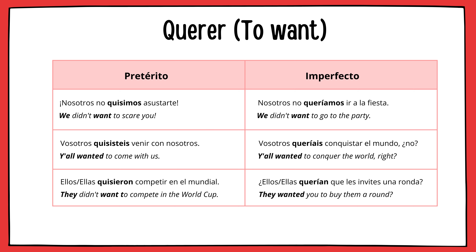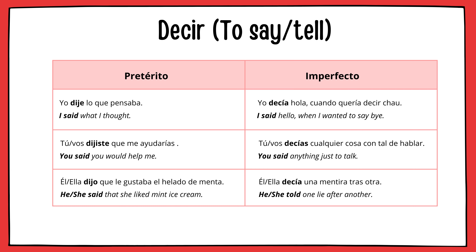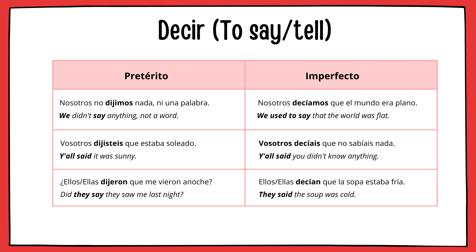Nosotros no quisimos asustarte. Vosotros quisisteis venir con nosotros. Ellos quisieron competir en el mundial. Nosotros no queríamos ir a la fiesta. Vosotros queríais conquistar al mundo, no. Ellos querían que les invites una ronda. Next verb is decir, which means 'to say' and can also mean 'to tell.' Yo dije lo que pensaba. Tú dijiste que me ayudarías. Él dijo que le gustaba el helado de menta. Yo decía hola cuando quería decir chao. Tú decías cualquier cosa con tal de hablar. Él decía una mentira tras otra.